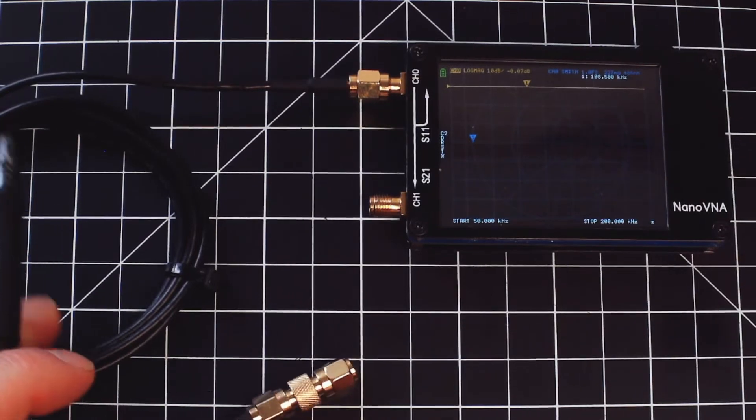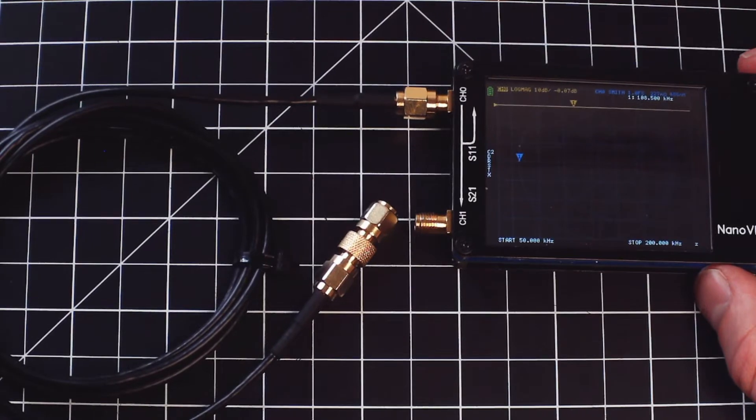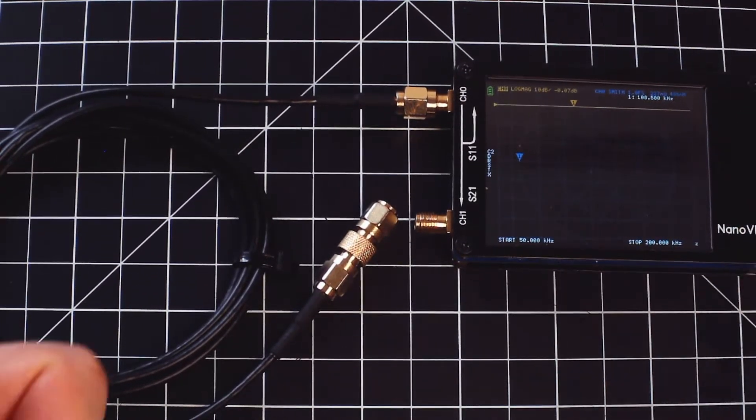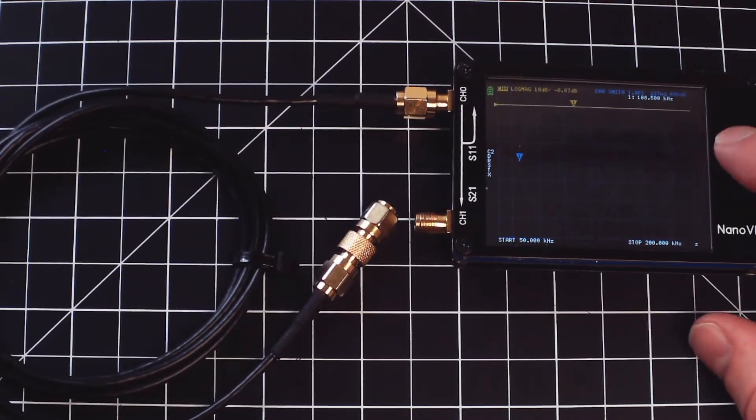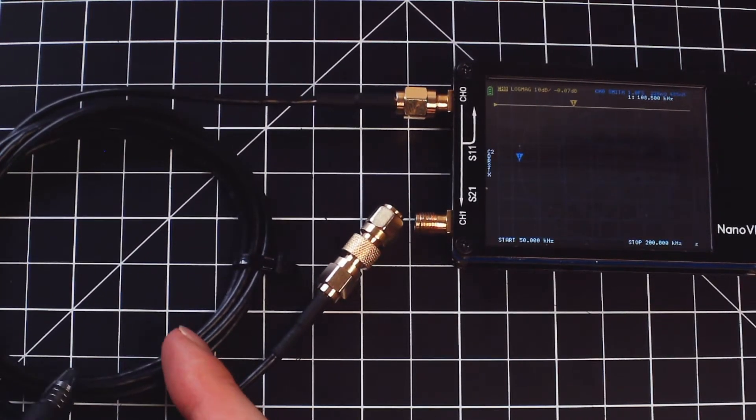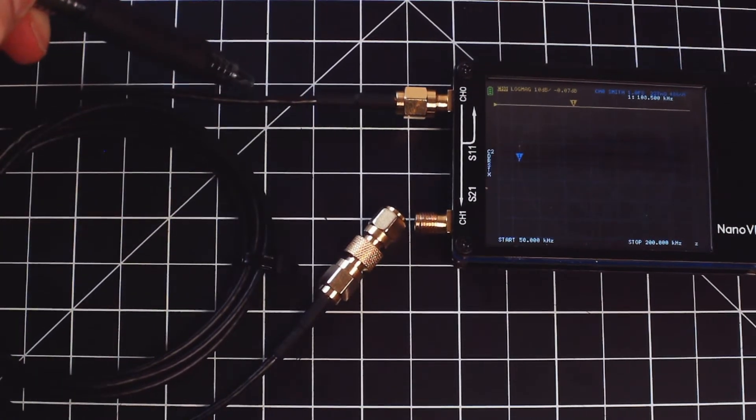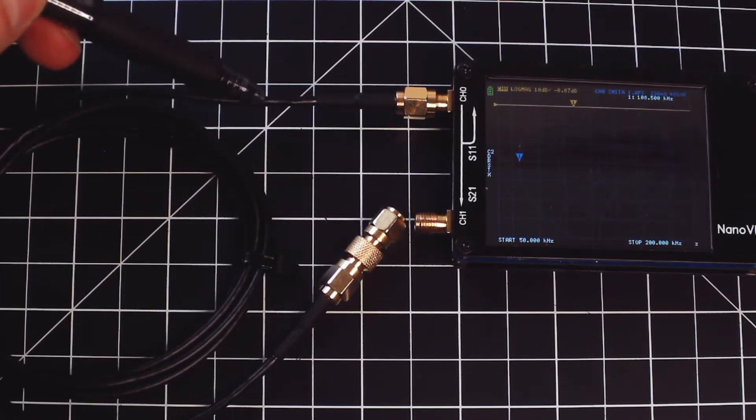The problem is this measurement of inductance changes with frequency. Since we are at a very low frequency, the true inductance of this cable is actually higher than it would be if we were operating at, say, 100 megahertz. So this is technically an accurate measurement, but it does not reflect the true inductance of this cable when you operate it at higher frequencies.